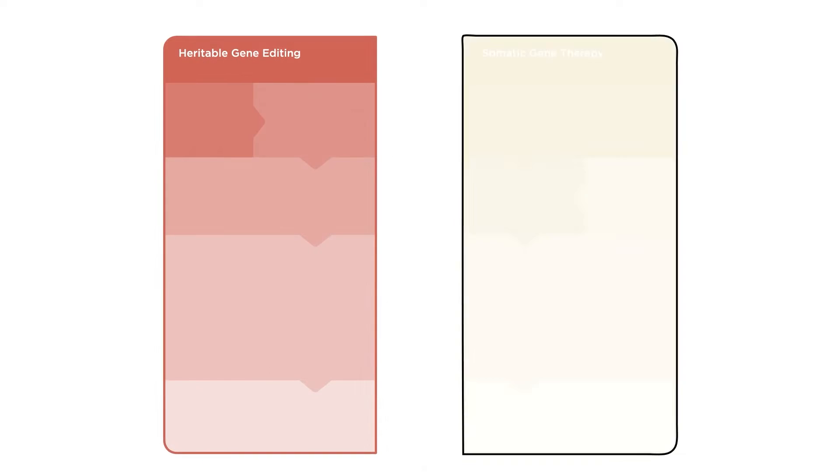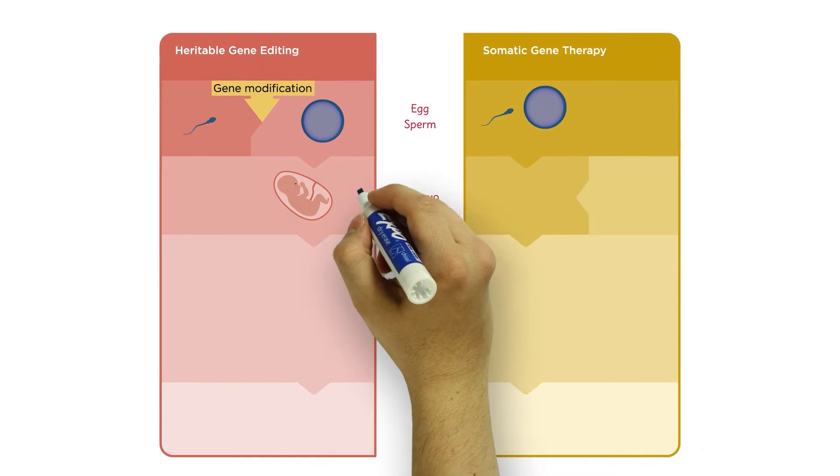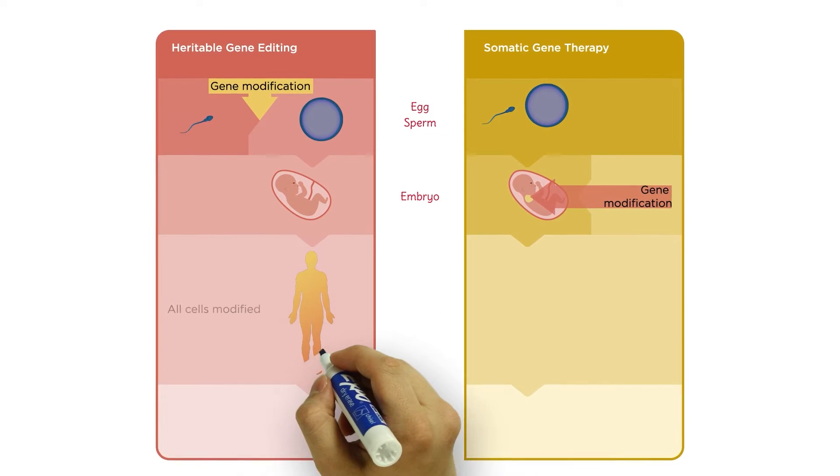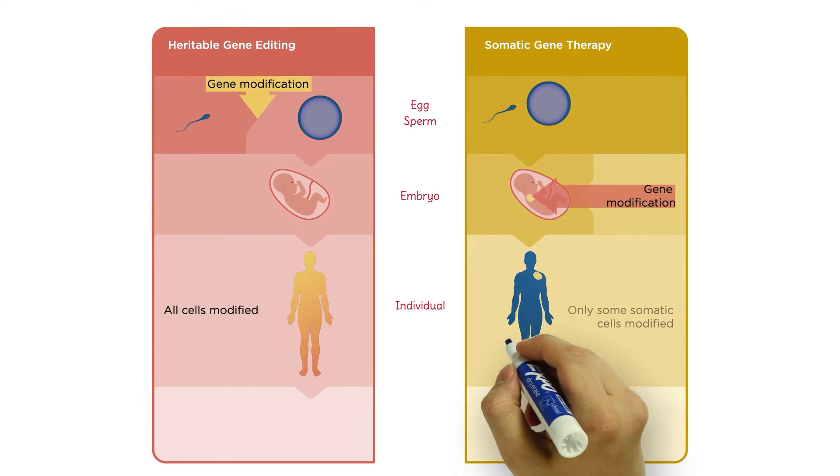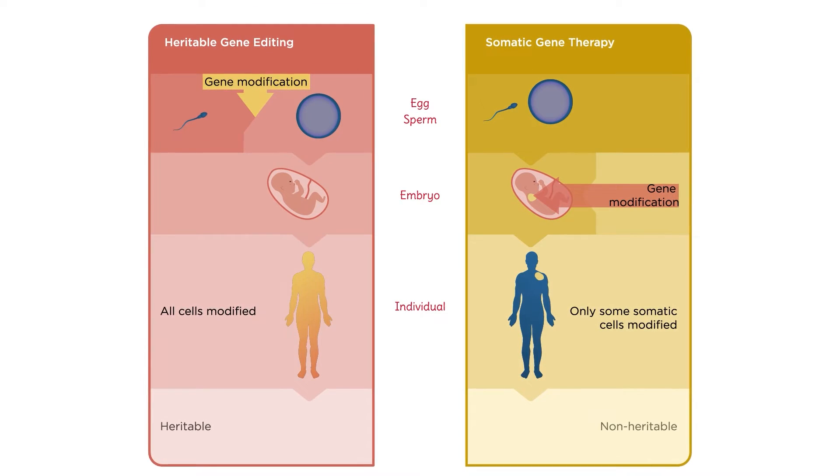Heritable genome editing occurs when a genetic modification takes place on the sperm or egg cells or during fertilization so that genetic changes are passed on to future generations.